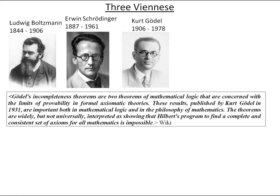Gödel's incompleteness theorems are two theorems of mathematical logic concerned with the limits of probability in formal axiomatic theories. These results, published by Kurt Gödel in 1931, are important both in mathematical logic and in the philosophy of mathematics. The theorems are widely, but not universally, interpreted as showing that Hilbert's program to find a complete and consistent set of axioms for all mathematics is impossible.